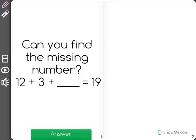This math problem says, can you find the missing number? 12 plus 3 plus blank equals 19. I'm going to get counters out to help me solve this problem.